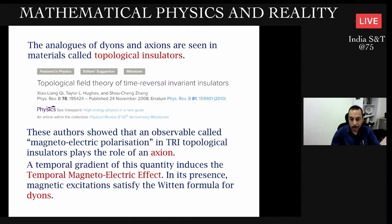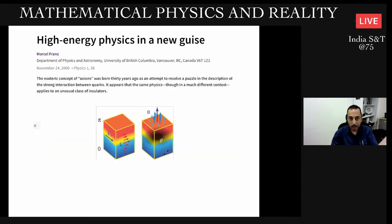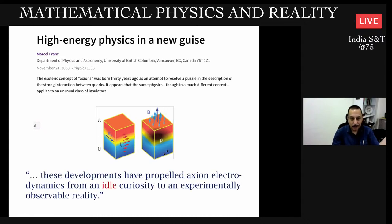In this important paper in 2008, the authors showed that a certain observable in these materials called magneto-electric polarization plays the role of an axion and actually satisfies the same equations as Wilczek's axion electrodynamics. They also found that if there's a temporal gradient, if this quantity is varying in time, then it induces the temporal magneto-electric effect, and magnetic excitations satisfy Witten's formula for dions.